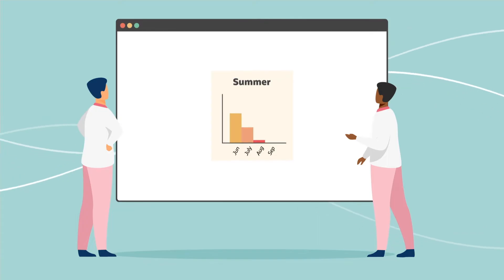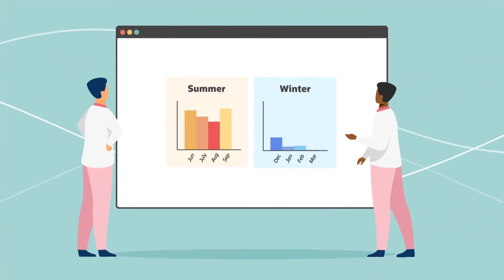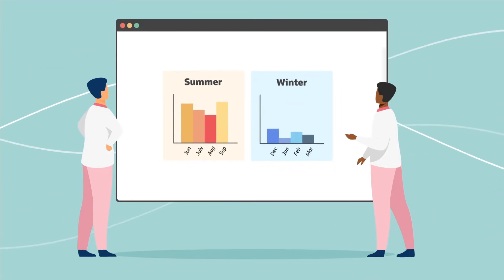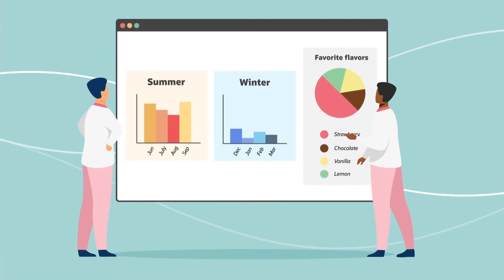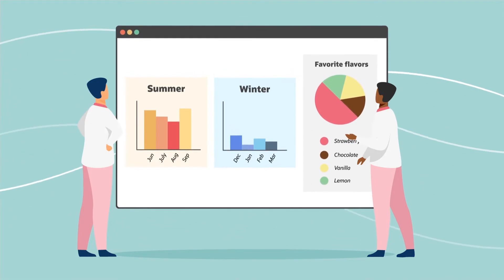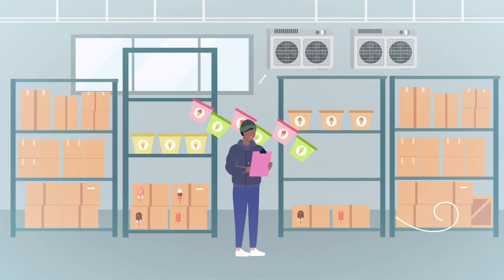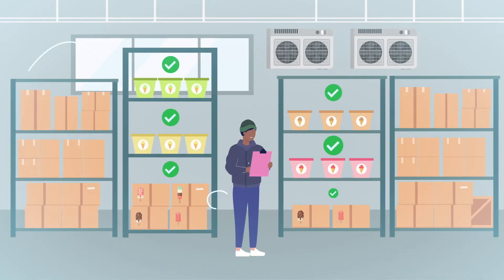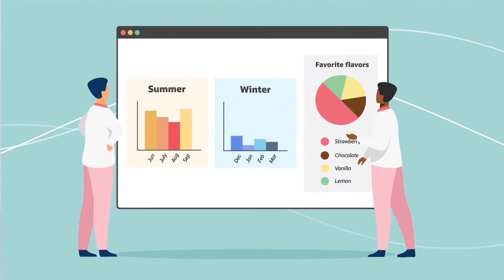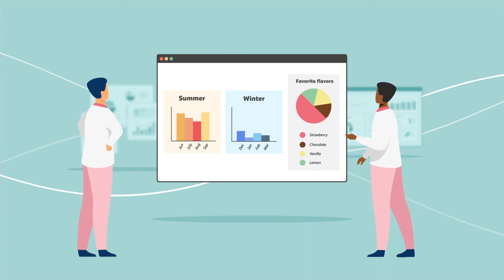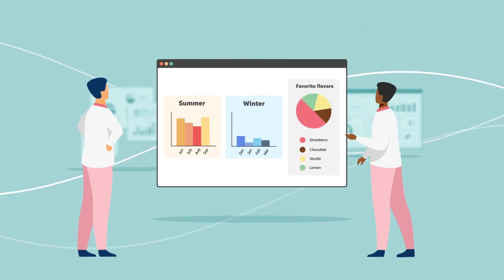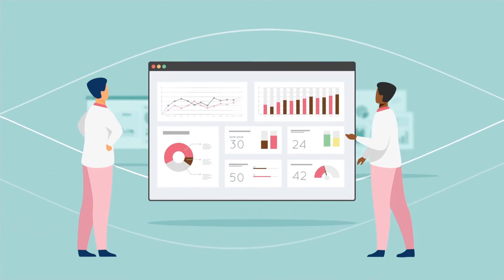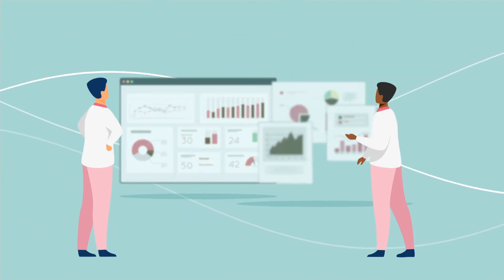With demand forecasting, demand planners can make informed decisions across the business. Inventory planning is conducted with predicted future demand in mind, ensuring appropriate inventory levels. In turn, space utilization in the warehouse is optimized, so the fastest-moving products are the easiest to fulfill. Demand forecasting also allows businesses to use future performance projections to make smarter decisions around areas like budgeting, resource allocation, pricing, and staffing.